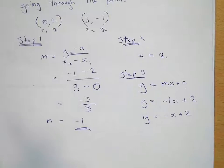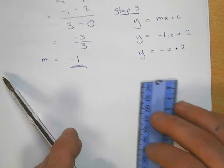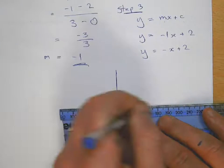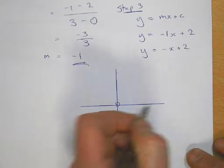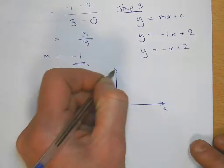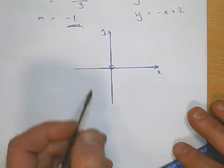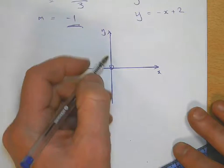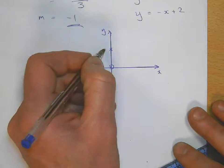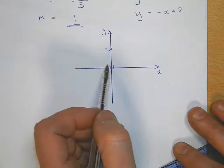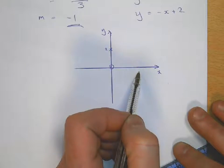So if I plot those two points on a set of axes like this, you've got your origin there, x and y. And if we wanted to put the point (0,2), we go along zero, and then we go up two. So let's just say roughly there. And the other point, (3,-1), means you go along three and down minus one, which is roughly there.